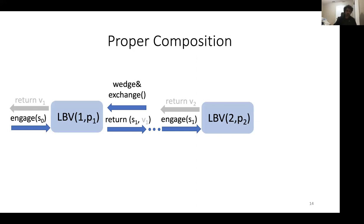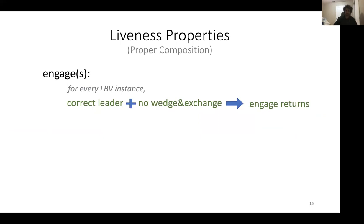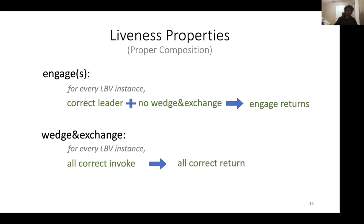This is how a proper execution of LBVs works. Now for the liveness properties: for every LBV instance, if the leader is correct and no correct party invokes wedge-and-exchange, then all correct invocations of engage eventually return. And if all correct parties invoke wedge-and-exchange, then all invocations eventually return.